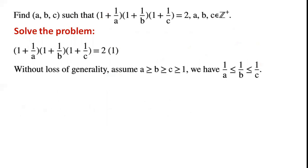Without loss of generality, assume a ≥ b ≥ c ≥ 1. By rearranging this inequality, we have 1/a ≤ 1/b ≤ 1/c.